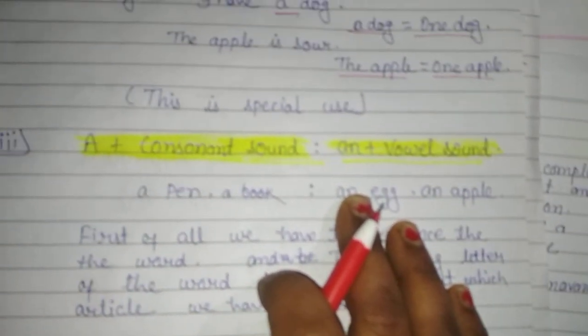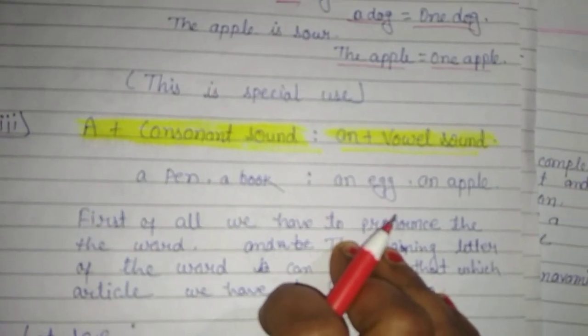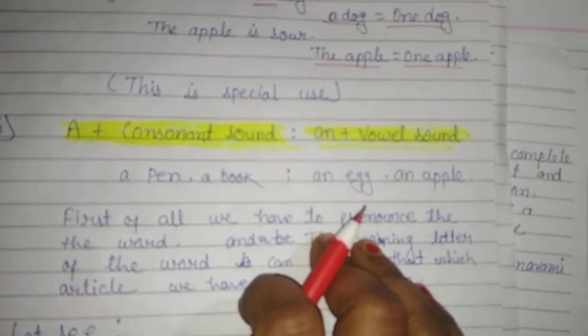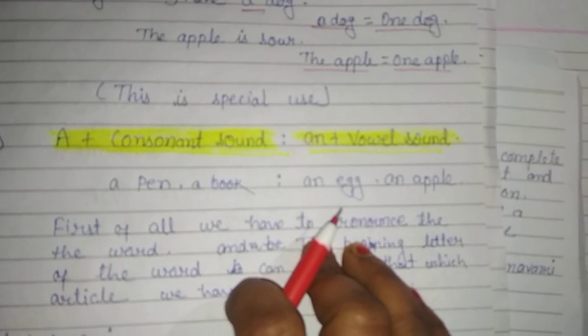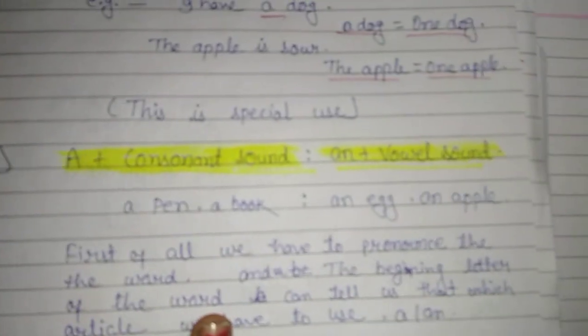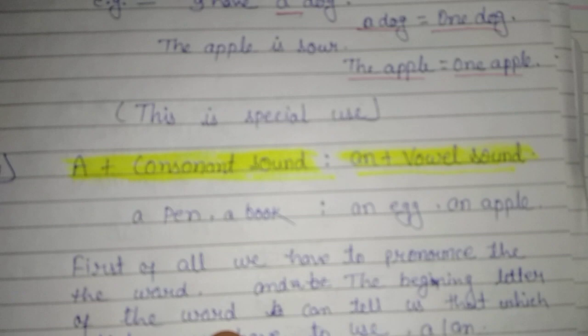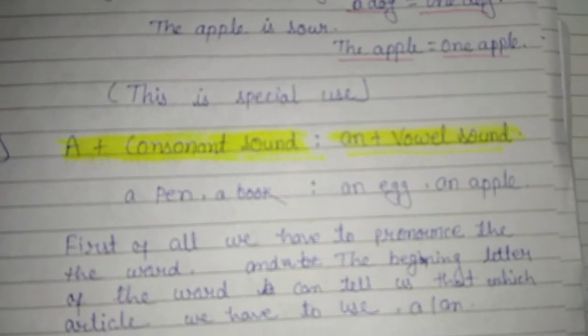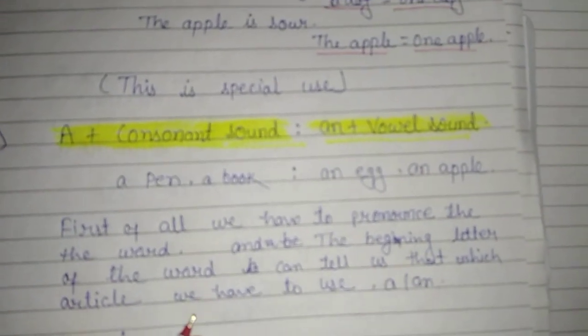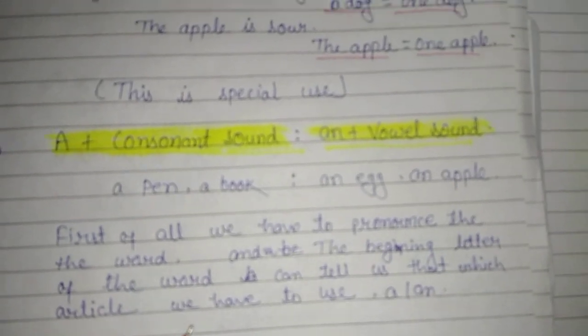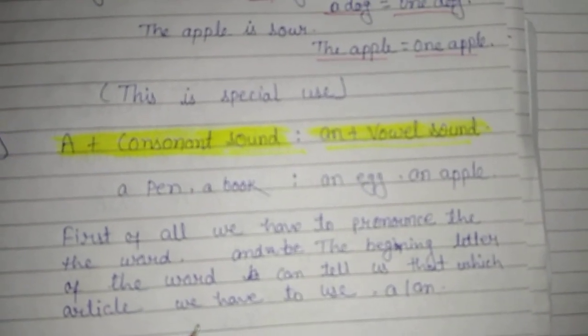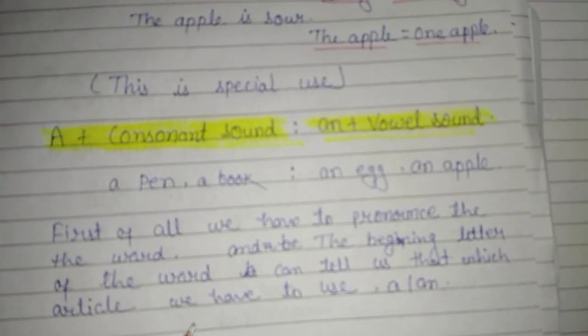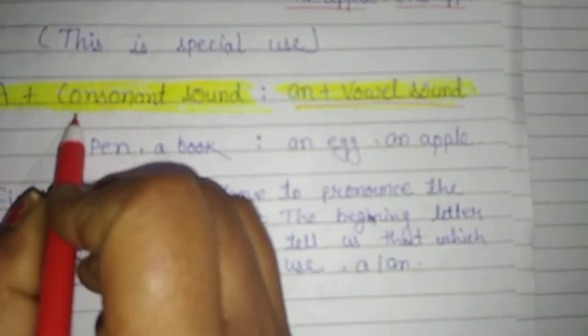And next we can learn about how we can use 'a' or 'an'. As I told you earlier, 'a' or 'an' is an indefinite article. And how we can use them? So 'a' is used before consonant sound and 'an' is used before vowel sound. Here as you can see that...